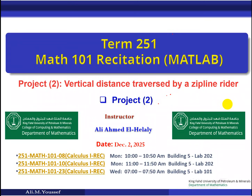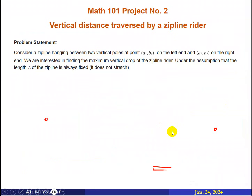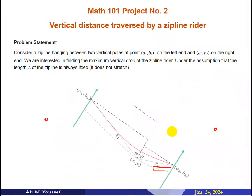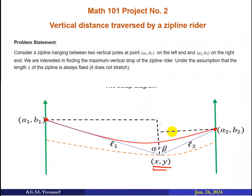Assalamu alaikum warahmatullahi wabarakatuh. Today I'm going to talk about the second project, which is about the zip line rider. We consider two points a1,b1 and a2,b2, and the length of the zip line is fixed as L. Our objective is to get the maximum vertical drop of the zip line rider.